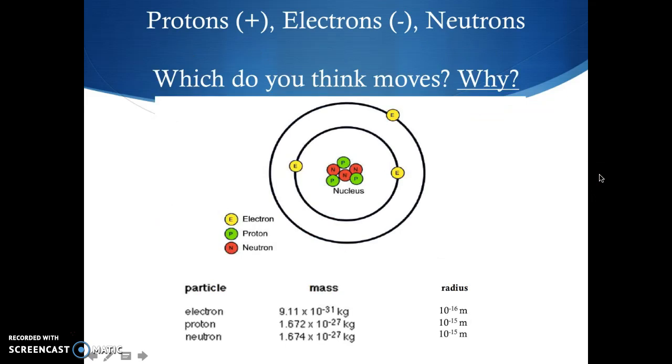Let's talk about moving charges. So one of these charges, protons, electrons, or neutrons can move, and we're going to try to reason through why just one of them can move. You may recognize this diagram right here, the Bohr model of an atom. We have the neutrons and protons kind of stuck in the nucleus found together, and then you have your various electron shells on the outside. In addition to that, we have the masses of electrons, protons, and neutrons listed out here. We also have the radii of an electron, a proton, and a neutron. So I want you to pause for a moment, and just think to yourself, with the information given on the screen, which of these charges do you think moves? And why do you think it moves?